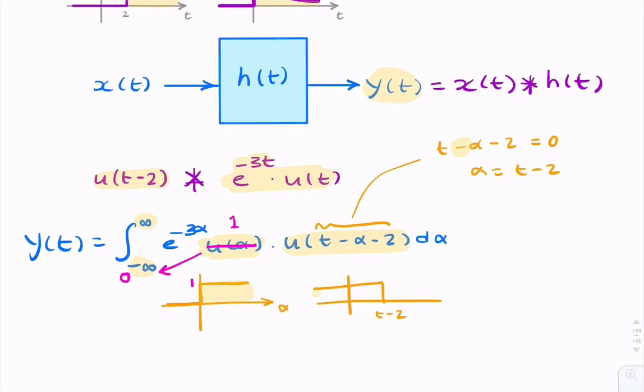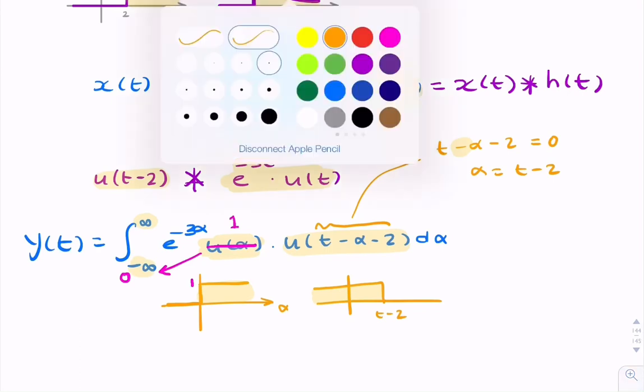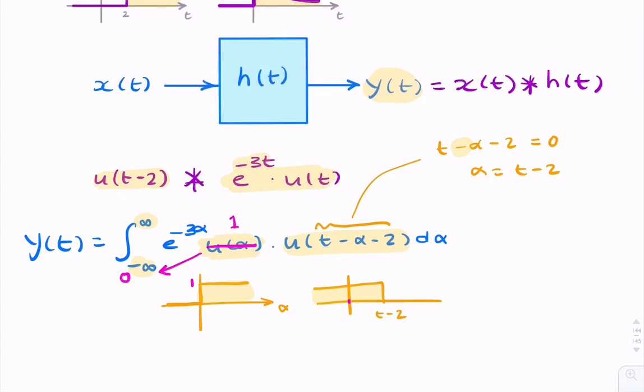So it's only non-zero for time less than t minus 2, less than or equal t minus 2. So now if you multiply the two, the only overlap you get is in this period between zero and t minus 2.